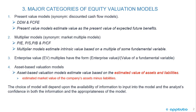The fourth major category of equity valuation models is asset-based models. Asset-based valuation models estimate value based on the estimated values of assets and liabilities. Importantly, it's the estimated market value of the company's assets minus the liabilities. For example, if a company uses US GAAP and has land on the balance sheet at historical cost, you wouldn't use book value for valuation. With asset-based valuation, you use estimated market value of assets minus liabilities.